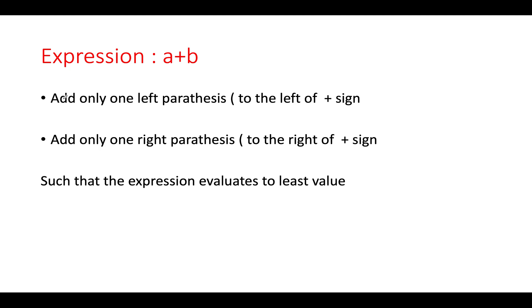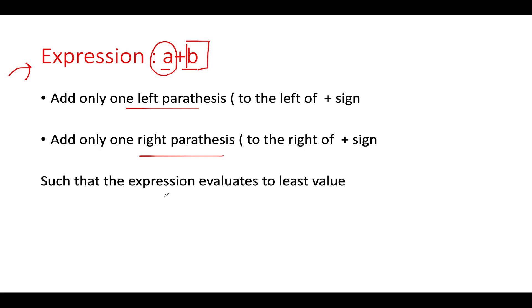Now let's get back to the question. We are given an expression in the format number one plus number two. We need to add a left parenthesis in the left part of the expression starting from the zeroth index up till the plus sign, and we need to add one right parenthesis in the right part of the expression starting from the plus sign up till the termination of the string, such that the expression evaluates to the least possible value.